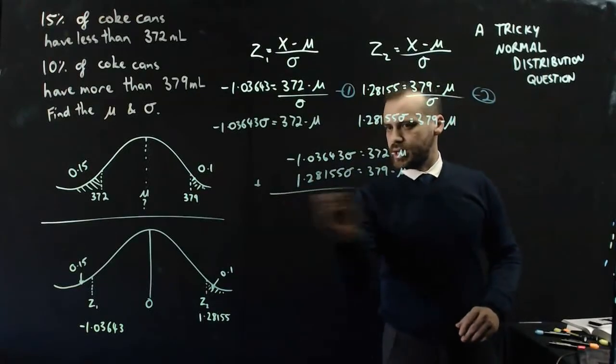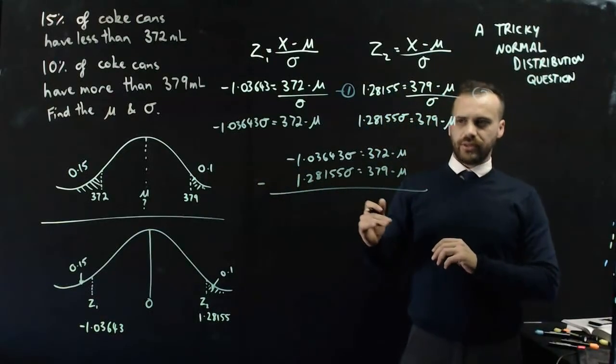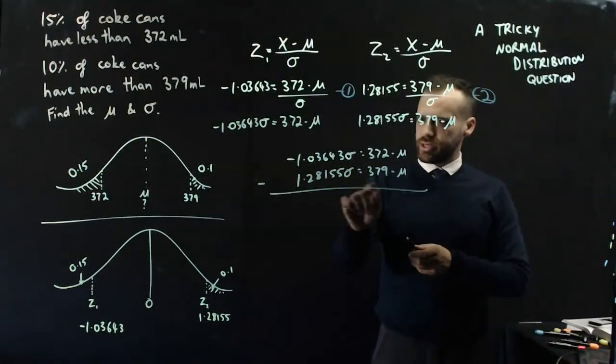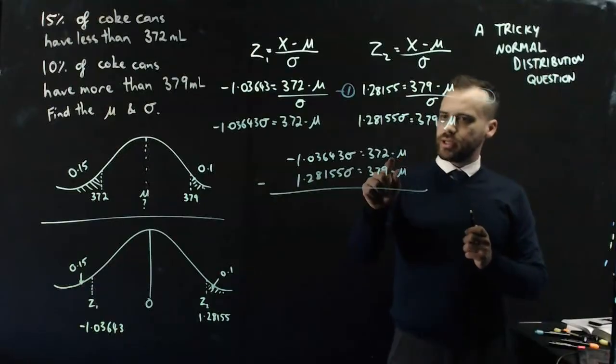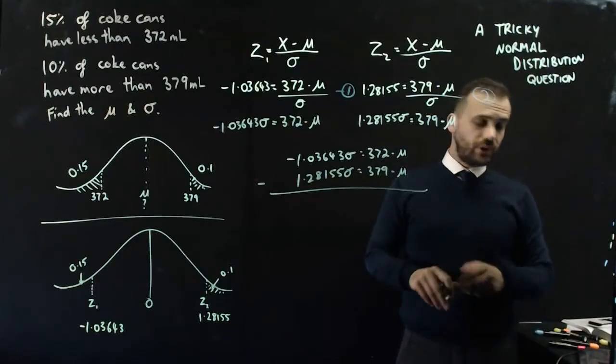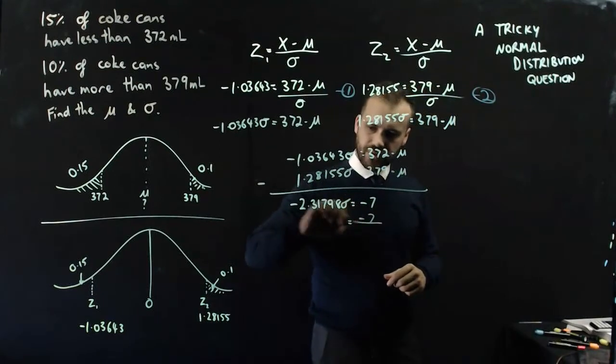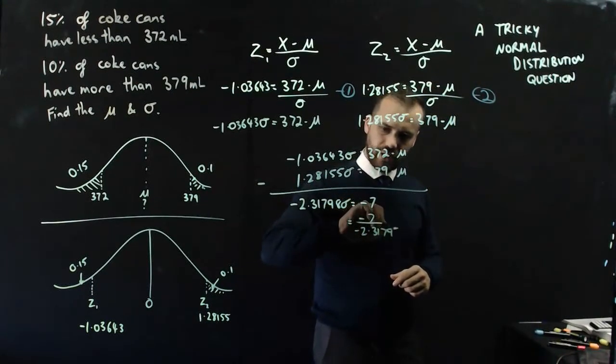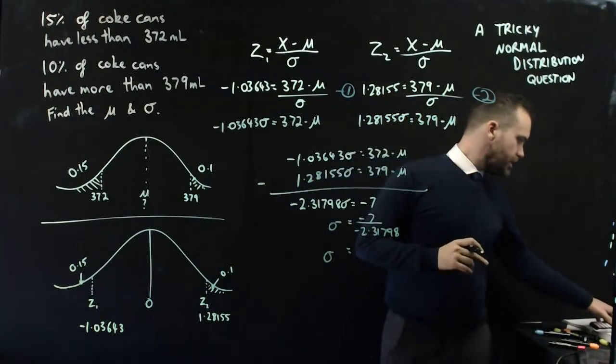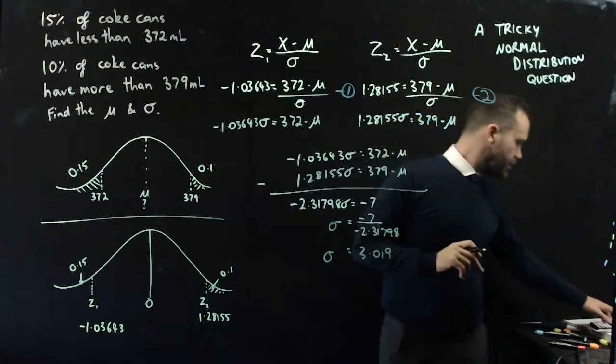I can subtract one equation from another. That minus that is going to be some number. This minus this is going to be some other number. But importantly, negative mean minus minus the mean is going to be 0 and the mean is going to fall out. I can do negative 7 divided by negative 2.31798 equals the standard deviation. And the standard deviation here is 3.01987.